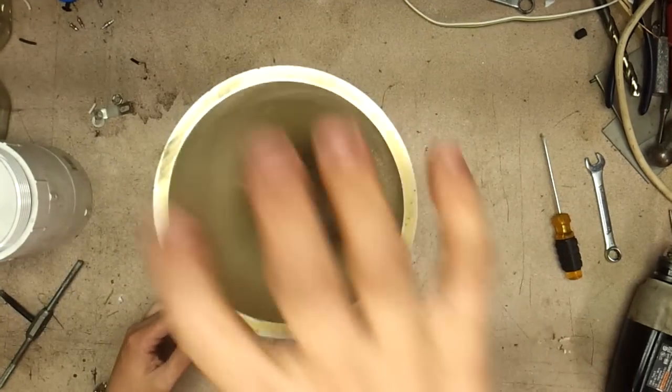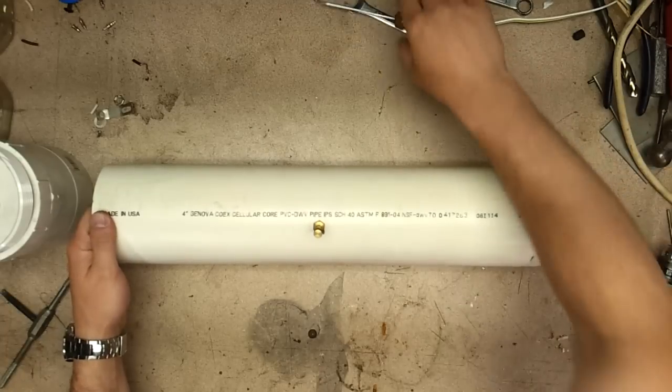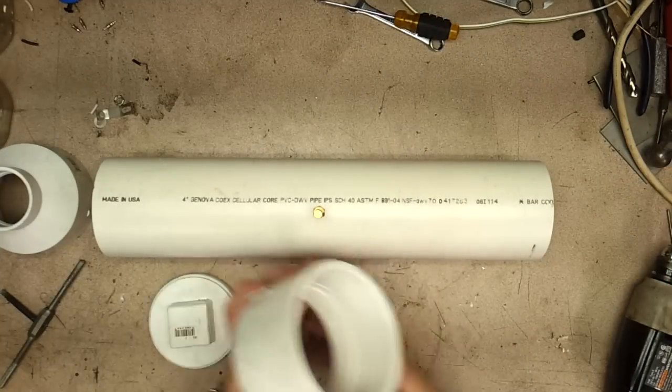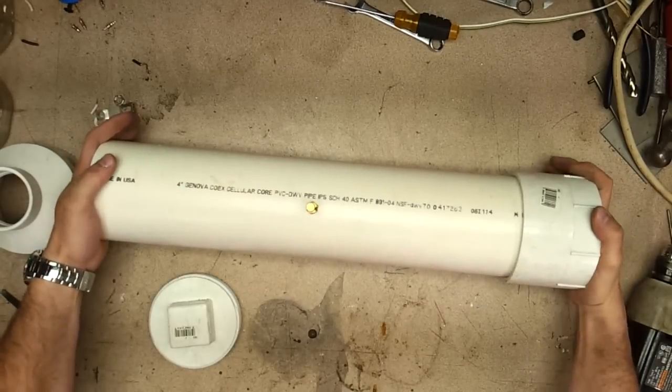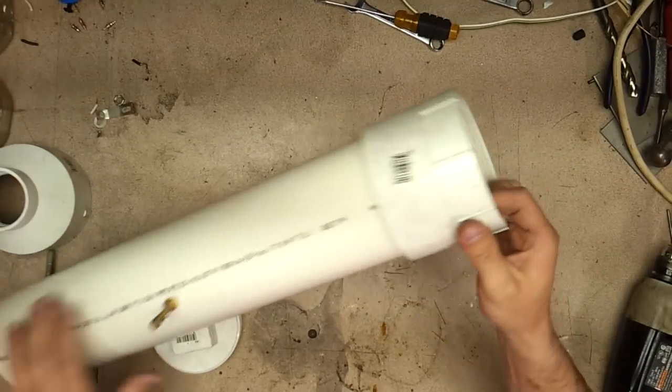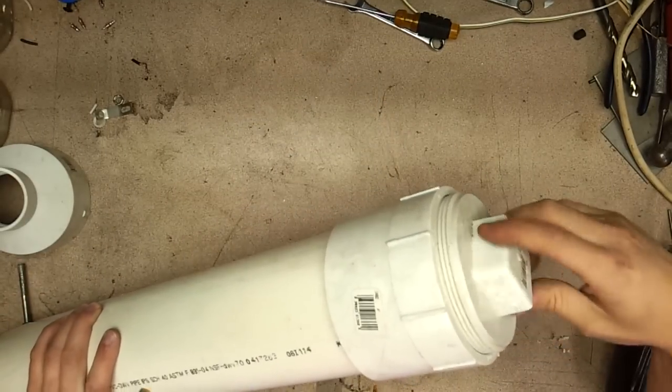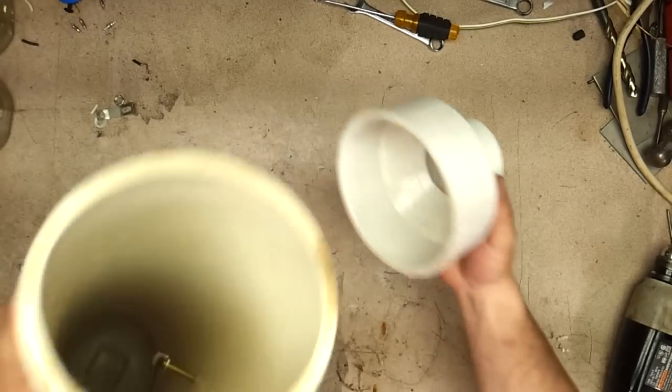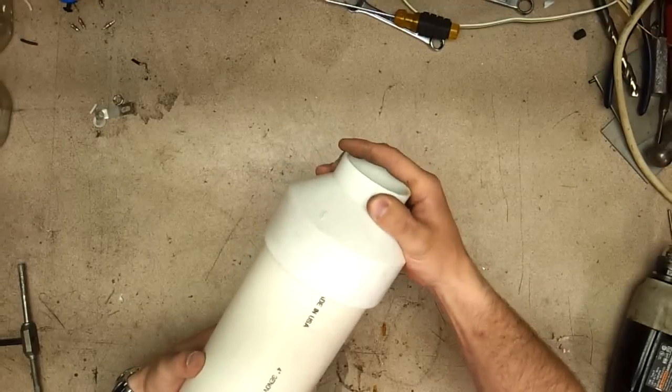From both ends, that's pretty much the hardest part. The rest is pretty simple. You want to take your end, obviously put your cleaner on it, PVC cleaner, PVC cement, and go ahead and glue it on like this. Your cap will go on as so, your four inch to two inch converter, clean it up, glue it on.